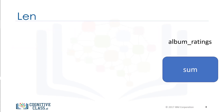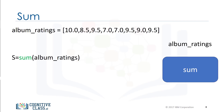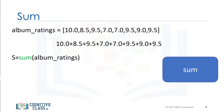The function sum takes in an iterable like a tuple or list and returns the total of all the elements. Consider the following list. We pass the list into the sum function and assign the result to the variable s. The function determines the total of all the elements, then returns it. In this case, the value is 70.